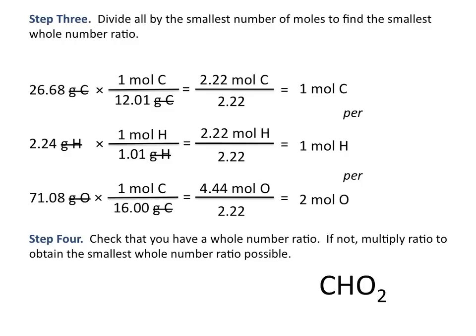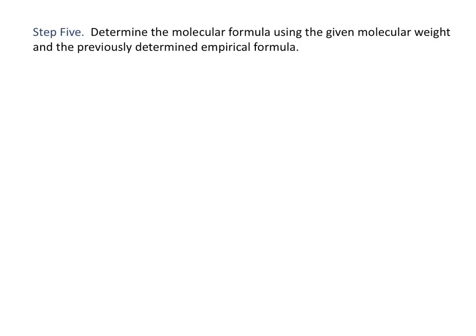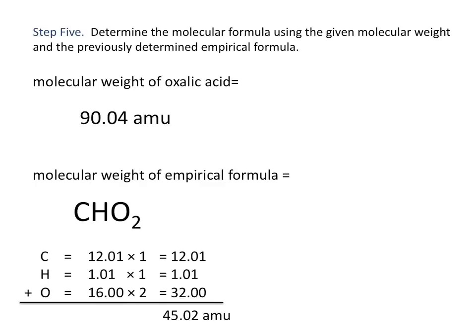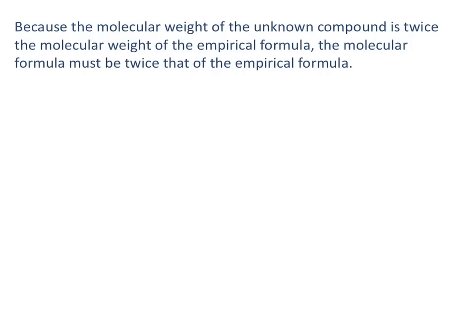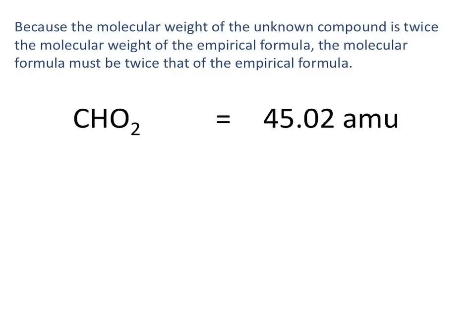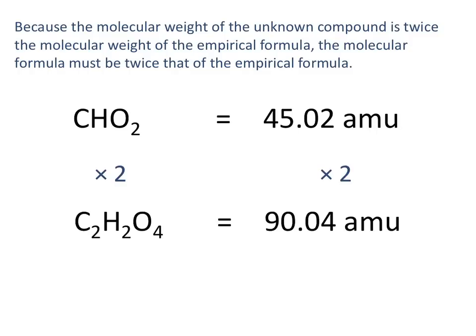This gives us an empirical formula of CHO2. To determine the molecular formula, we compare the given molecular weight of oxalic acid — 90.04 AMU — to the molecular weight of the empirical formula, which is 45.02 AMU. Again, the molecular weight of the compound is twice that of the empirical formula, so the molecular formula is twice the empirical formula.